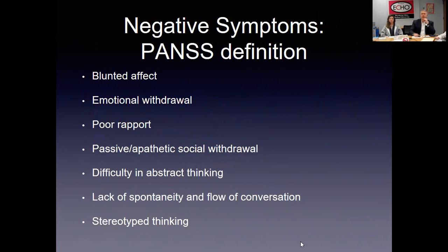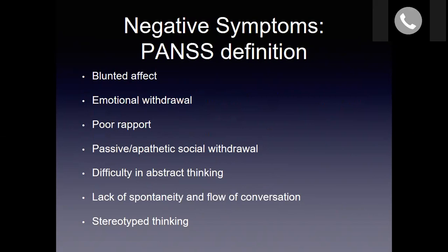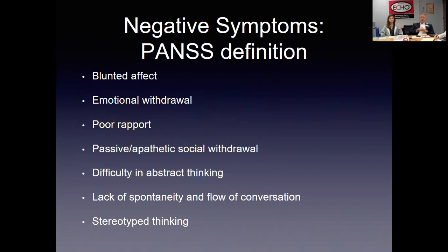For an overall definition of negative symptoms, this is taken directly from the PANSS — the Positive and Negative Symptom Scale. This is essentially one of the gold standard symptom rating scales used in the majority of clinical research on schizophrenia. So if you're a drug company wanting to test effectiveness of a medicine, or a psychologist testing a psychological intervention, odds are you'll use the PANSS as your measure of effectiveness. The PANSS, as the name implies, addresses both positive and negative symptoms.